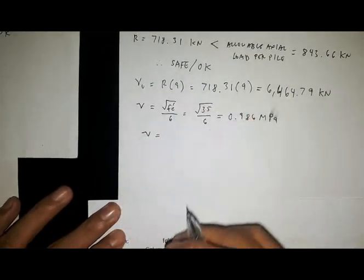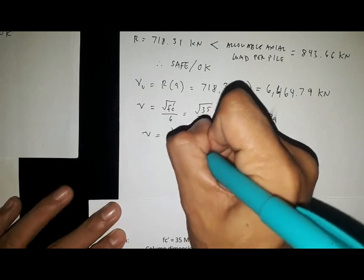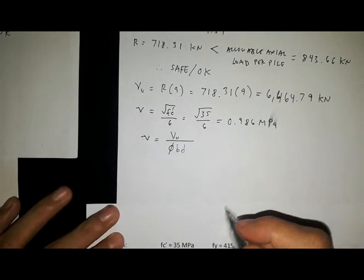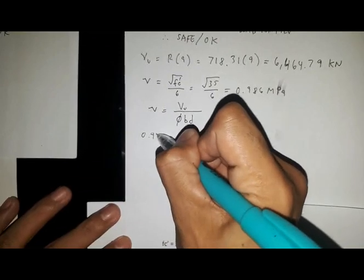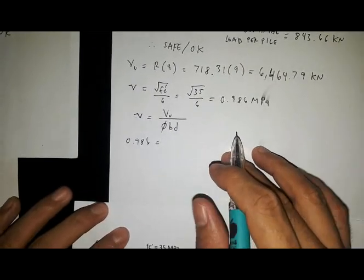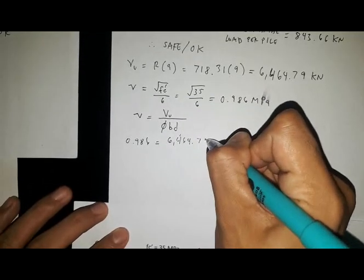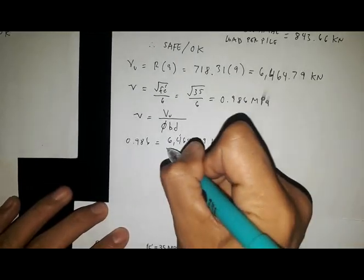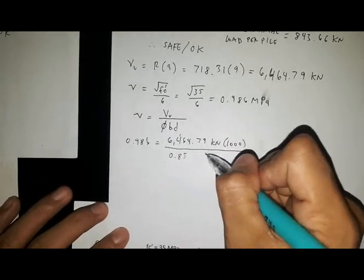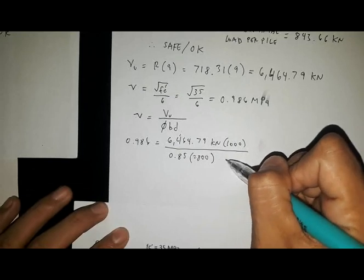Using the formula for critical beam shear stress, the shear stress equals Vu over φBD. By substitution, 0.986 equals Vu of 6464.79 kilonewtons times one thousand to convert to newtons, divided by 0.85 times the length of 2800 millimeters times D.